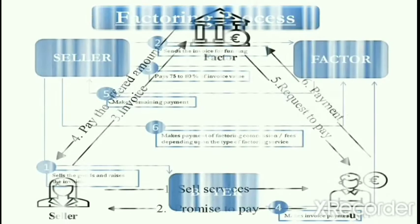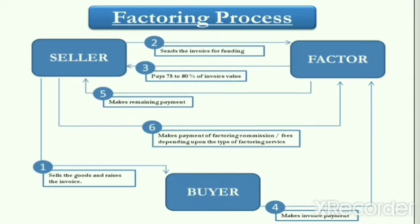This is the process of factoring. Now let us see the concept of factoring in six different stages. In the first stage, the client concludes the accredited sale. The second stage includes the client selling the customer's account to the factor and notifying the customer. The third step includes a partial payment made by the factor after adjusting commission and interest in advance against the accounts purchased. The fourth step includes the customer's account being maintained by the factor, who undertakes any follow-ups for payment. The fifth stage includes any amount due from the customer being remitted to the factor, and the last step: on the due date the factor makes the final payment to the client.